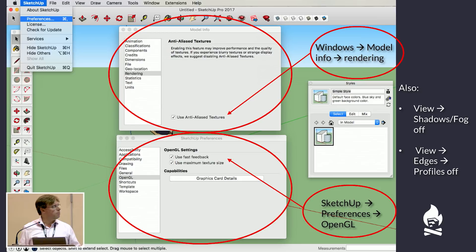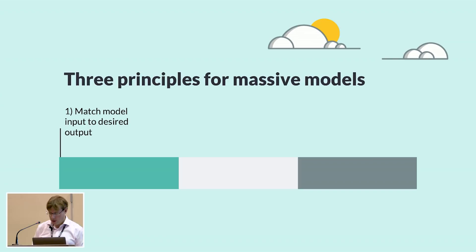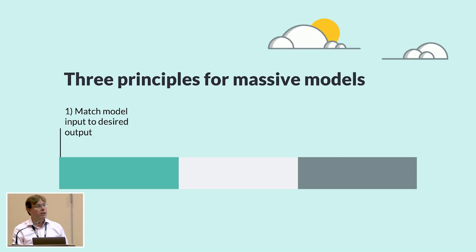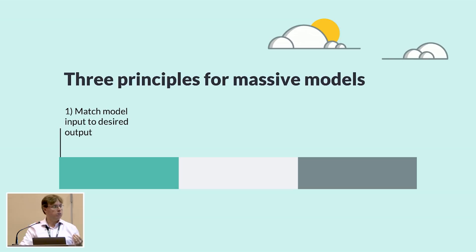With your computer setup checked and optimized, we move to the first of the three principles: matching input to desired output. This covers aspects from the initial design stage before you start clicking the mouse, right through to finished delivery. Questions to ask: what are you going to do with the finished model? What levels of accuracy and detail are needed? What's the audience? Key questions that boil it all down: where will you be looking at this model from, and what do you want to see? Making those decisions early helps you focus modeling effort and invest detail and time in the right places.